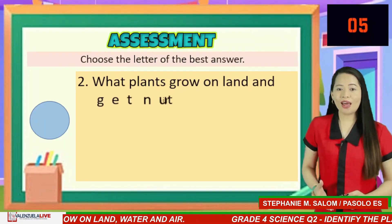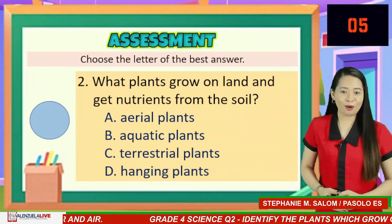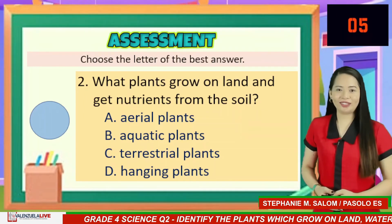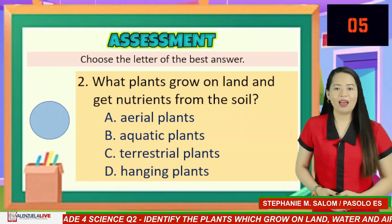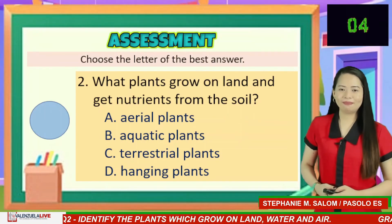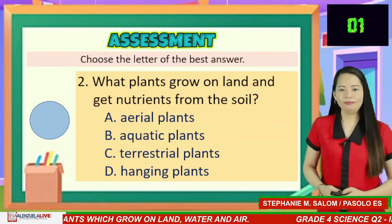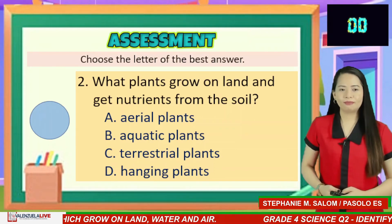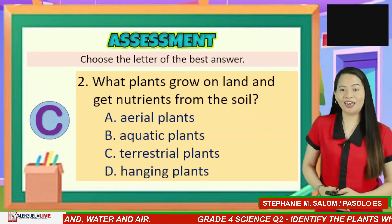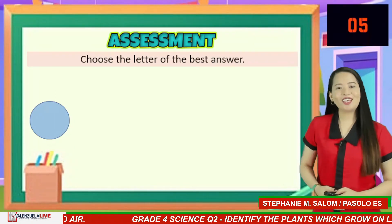Number 2: What plants grow on land and get nutrients from the soil? A. Aerial plants, B. Aquatic plants, C. Terrestrial plants, D. Hanging plants. You have five seconds to answer. If your answer is letter C — terrestrial plants — amazing!